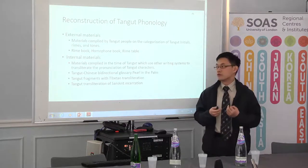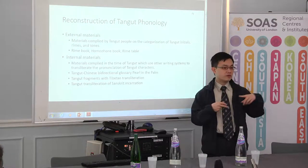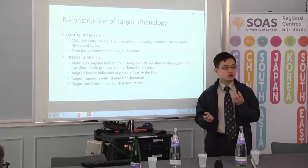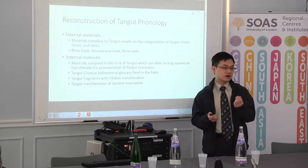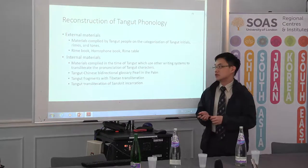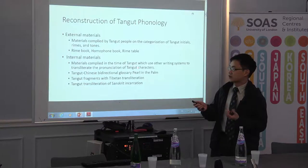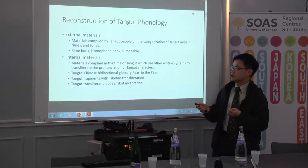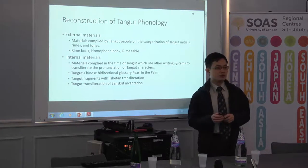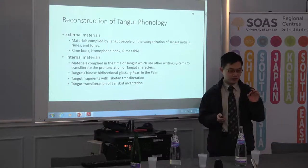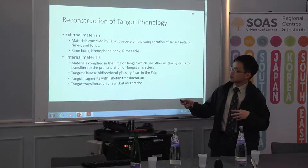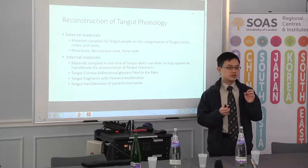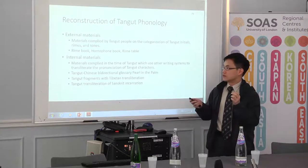Previous scholars have already done a lot of work on these materials. So after we get a framework on how many categories there are for the tones, initials, and rhymes, we still don't know what they exactly are, because we don't know the sound value of individual categories. That's why we have to consult the internal materials — materials compiled at the time of Tangut — where Tangut, Tibetan, or Chinese people used other writing systems to transliterate the pronunciation of Tangut characters. These materials provide information on the sound value of individual characters, and combined with the framework from external materials, we can know the approximate or more accurate sound value of individual categories.